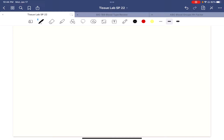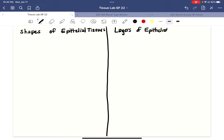Let's look at the shapes and layers of epithelial tissue so that we can categorize them correctly. These are the shapes of epithelial tissue, and then on the other side of this page we'll draw the layers of epithelial tissue. The important things there are the word shape and layers.